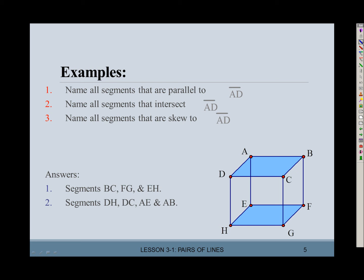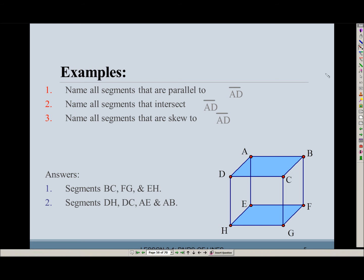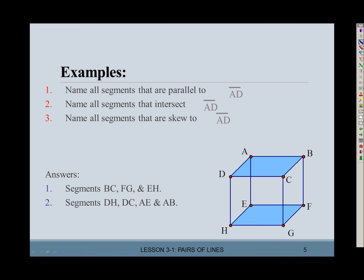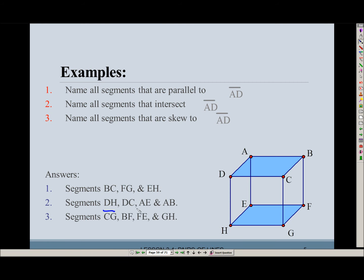What about segments that are skew to segment AD? That means it's not parallel and it doesn't intersect. So it's going to be all the ones we haven't mentioned: segment CG, segment BF, segment FE, and segment GH. None of these are parallel to segment AD and none of them intersect, so those are the skew segments. Remember to put the bars on top of the letters.